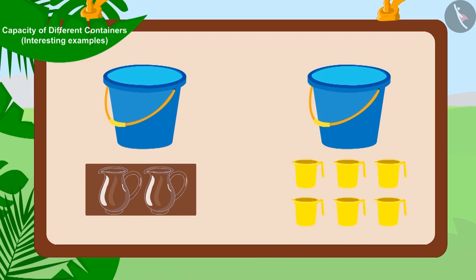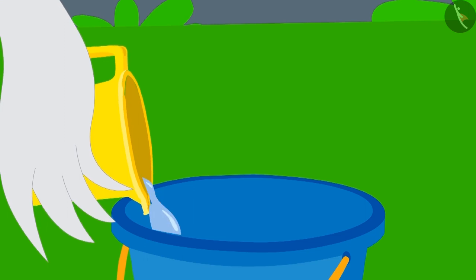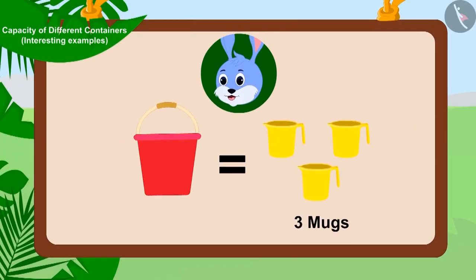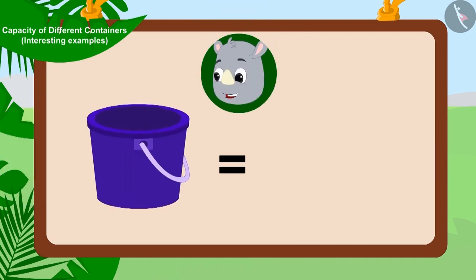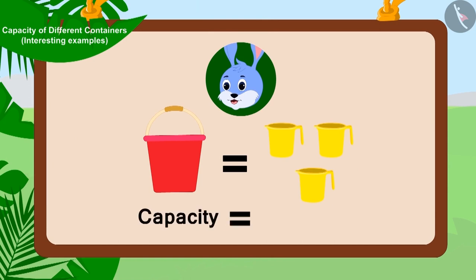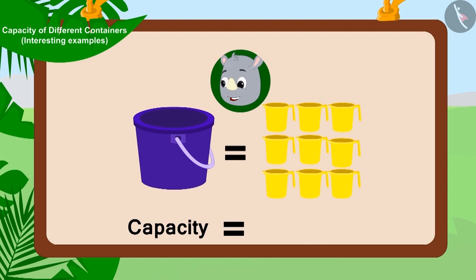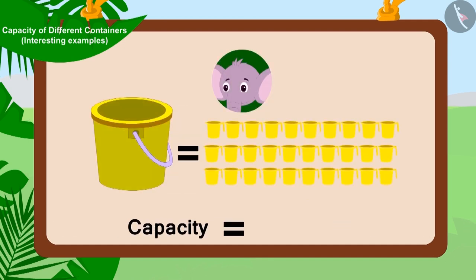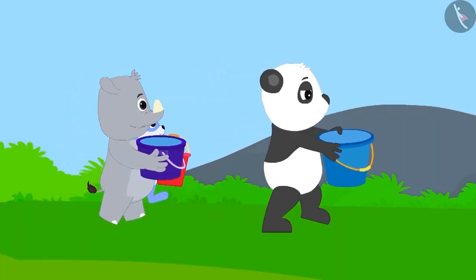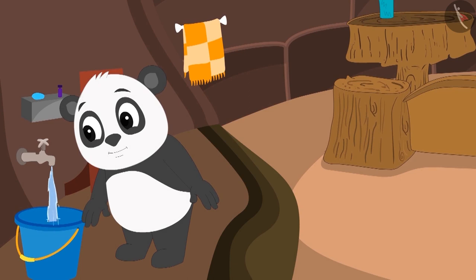Uncle also filled the buckets of the other villagers using his mug. Bunny's bucket was filled with three mugs of water, Kagu's bucket was filled with nine mugs of water, and Appu's bucket was filled with thirty mugs of water. So the capacity of Bunny's bucket is three mugs, Kagu's bucket is nine mugs, and Appu's bucket is thirty mugs.